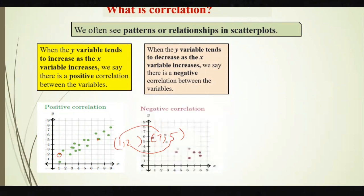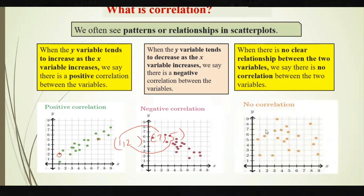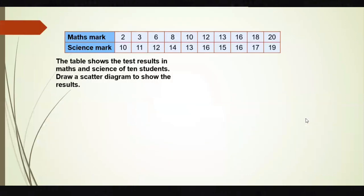When y tends to decrease as x increases, we say it is a negative correlation — the trend is going down. Y is decreasing as x is increasing, so this is called negative correlation. When there is no clear relationship between the two variables, we say there is no correlation. The points are all scattered and you cannot find any relationship between x and y.